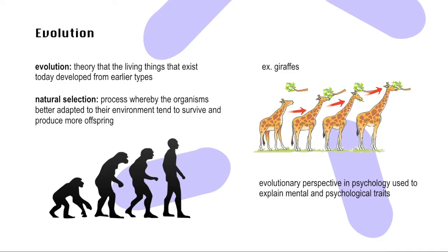For instance, giraffes used to have relatively short necks, but because lower vegetation was eaten by other animals, it was more favorable for giraffes to eat food higher up in the trees. The giraffes with long necks were therefore able to survive and pass on their traits to their offspring, resulting in giraffes having long necks nowadays.